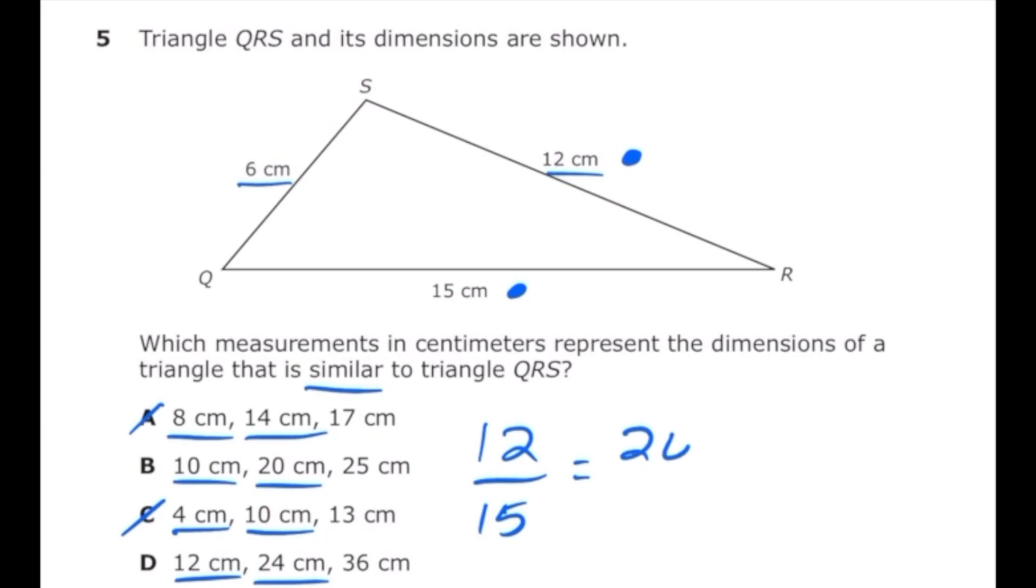To see if these fractions are equivalent I'm going to cross multiply, though you could just reduce these fractions. When I cross multiply, 15 times 20 is 300, and on the other side 25 times 12 is also 300. So I know those sides are proportional, so the correct answer is letter B.